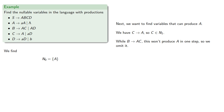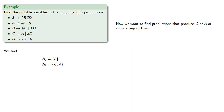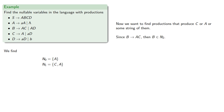While B produces AC, this won't produce just A in one step, so we don't include it at this point. Our new set N1 is {C, A}. Now we want to find productions that produce C or A or some string of them. Since B produces AC, B is in N2, as well as C and A.